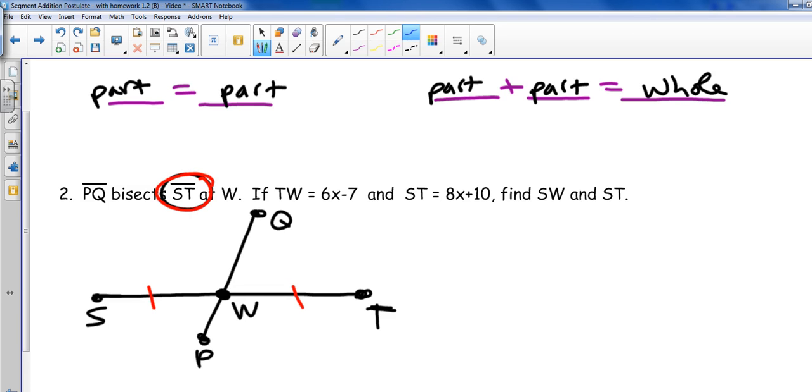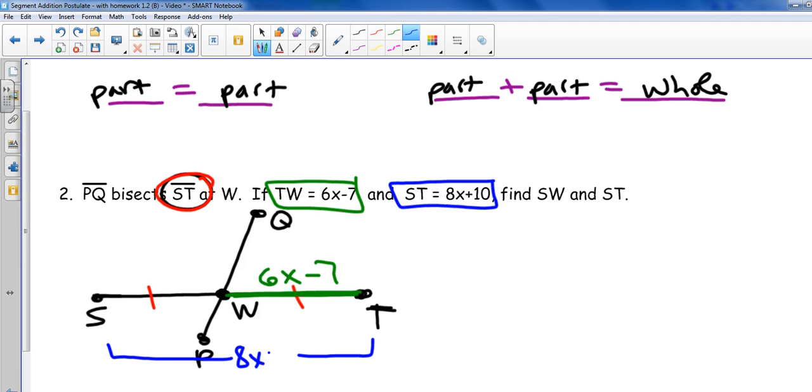Let's get everything on our picture and then let's figure out what we can do with it. I've got TW is equal to 6X minus 7. I've got ST is equal to 8X plus 10. Be careful, look at your picture. ST is not the other part. ST is actually all of this, what I would refer to as the whole length of that segment. We're asked to find SW and ST. I don't really care about that right now. What I care about is I have to come up with an equation that relates the two expressions I just wrote down, the 6X minus 7 and the 8X plus 10. And it has to be true.